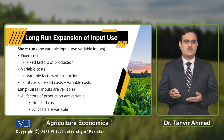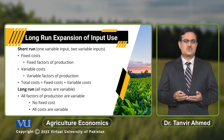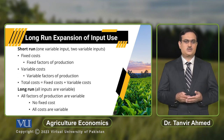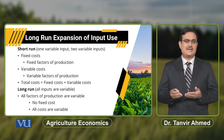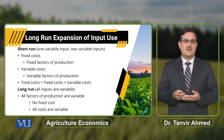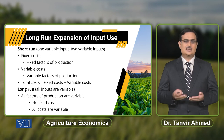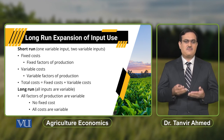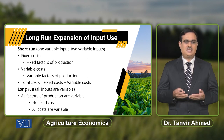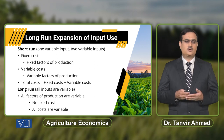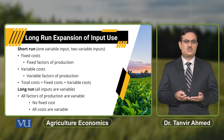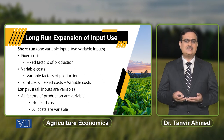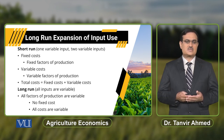The given quantity of other inputs basically refers to fixed factors of production. Against these fixed factors of production, the firm has to bear a certain cost, which we call fixed cost. The factor of production that a farmer can change is called the variable factor of production, and this is the part of variable cost.